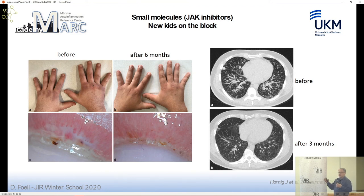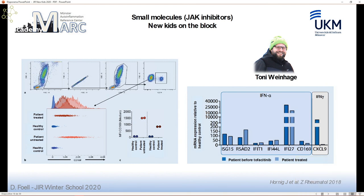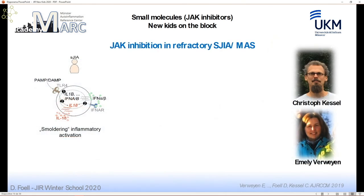The improvement was paralleled by impressive clinical signs: skin improved, nailfold capillary microscopy improved, and lung CT scans showed a real reduction of interstitial lung disease. This shows the potential of this treatment in a patient refractory to rituximab and cyclophosphamide. Lab work by Tony Weinhage showed elevated cGAS-STING signaling (cGAMP on PBMCs) that was significantly reduced with treatment. The type 1 interferon score was elevated but interestingly cXCL9, a readout of interferon gamma activation, was what was most clearly targeted by tofacitinib — suggesting IFN-γ pathway involvement in MDA5-positive dermatomyositis.